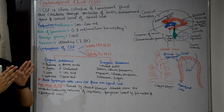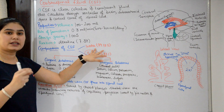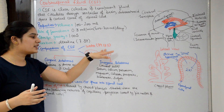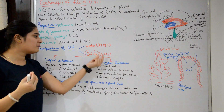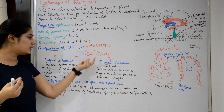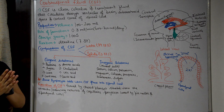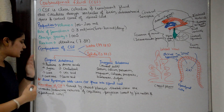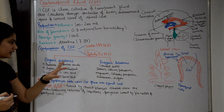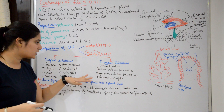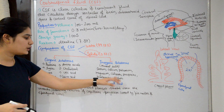Now let's look at the composition of CSF. Water makes up 99.13% of CSF, while solids account for 0.87%. The solid components include organic substances such as proteins, amino acids, sugar, cholesterol, urea, uric acid, creatinine, and lactic acid. Inorganic substances include mineral salts like sodium, calcium, potassium, magnesium, chlorides, phosphates, bicarbonates, and sulfates.